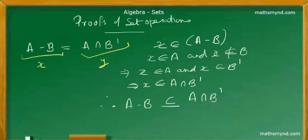Which again means that if X is not an element of B then it should be an element of B complement. That leads to the conclusion that X is an element of A intersection B complement.